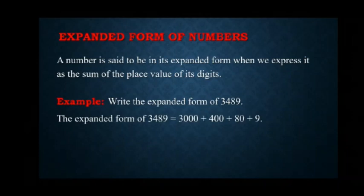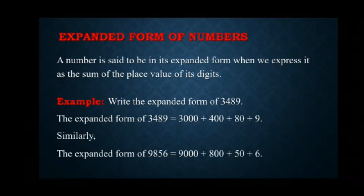So, expanded form is nothing but the sum of the place values: 3000 plus 400 plus 80 plus 9. Similarly, the expanded form of 9,856 is 9,000 plus 800 plus 50 plus 6.